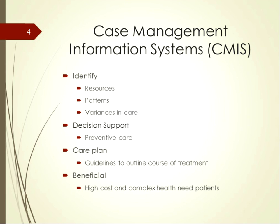Case management information systems identify resources, patterns, and variances in care to prevent costly complications related to chronic conditions and to enhance the overall outcomes for patients with chronic illnesses. These systems span past episodes of treatment in search for trends among records. Once a trend is identified, case management systems provide decision support promoting preventative care. Care plans are a common tool found in case management systems. A care plan is a set of care guidelines that outline the course of treatment and the recommended interventions that should be implemented to achieve optimal results.